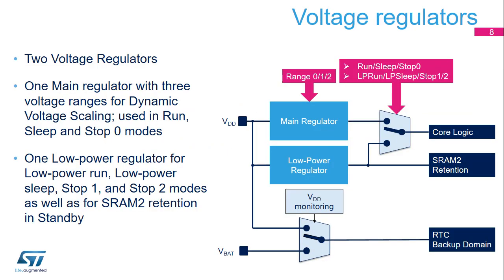Two embedded linear voltage regulators supply all the digital circuitries except for the standby circuitry and the backup domain. The regulator output voltage providing V-Core can be programmed by software to three different values depending on the performance and power consumption requirements — this is called dynamic voltage scaling. Depending on the application mode, V-Core is provided either by the main voltage regulator for run, sleep, and stop 0 modes, or by the low-power regulator for low-power run, low-power sleep, stop 1, and stop 2 modes. The regulators are off in standby and shutdown modes. When SRAM2 content is preserved in standby mode, the low-power regulator remains on and provides the SRAM2 supply.